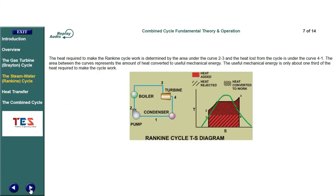The heat required to make the Rankine cycle work is determined by the area under the curve 2-3, and the heat lost from the cycle is under the curve 4-1. The area between the curves represents the amount of heat converted to useful mechanical energy. The useful mechanical energy is only about one-third of the heat required to make the cycle work.